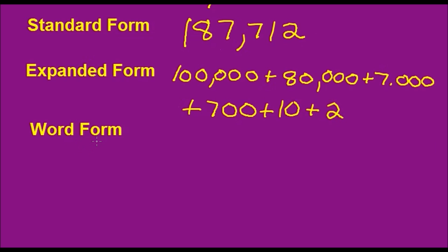And now on to word form, everybody's favorite. You have to remember the names of the period. So if we had millions in front of here, we would write one millions or 123 millions, but we only have thousands. So we're going to start here. 187 is how you read it, and it's in the thousands period. So we write it as 187,000.